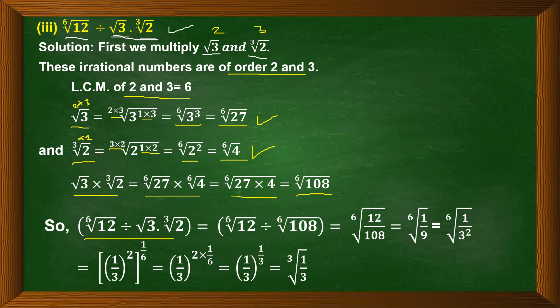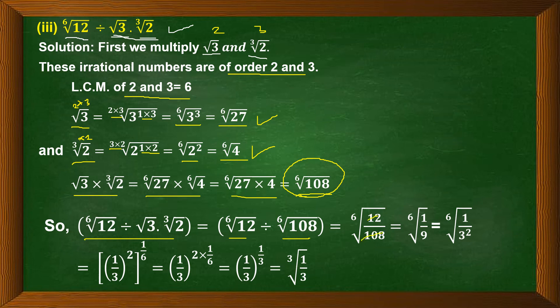The original denominator irrational numbers can be written as 6th root of 27 into 6th root of 4. Applying the first law — same order means multiply inside — we get 6th root of 27 into 4, which is 6th root of 108. So the original expression 6th root of 12 divided by square root of 3 into cube root of 2 becomes 6th root of 12 divided by 6th root of 108. Now the order is same, and we apply the division law: 6th root of the whole 12 by 108. Simplifying, 12 into 9 is 108, so we get 6th root of 1 by 9.